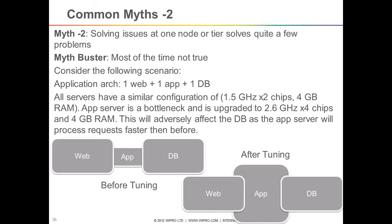The second myth is that solving issues at one node or tier solves quite a few problems. Consider: web server, app server, and DB server are present. Before tuning, web and DB had problems; after tuning them, more load moves to the app server. It's like a road junction — you build a flyover to resolve traffic, but traffic then gets clogged at the next junction. Solving one node actually shifts the problem. A good performance infrastructure should have a balance of load across all tiers.